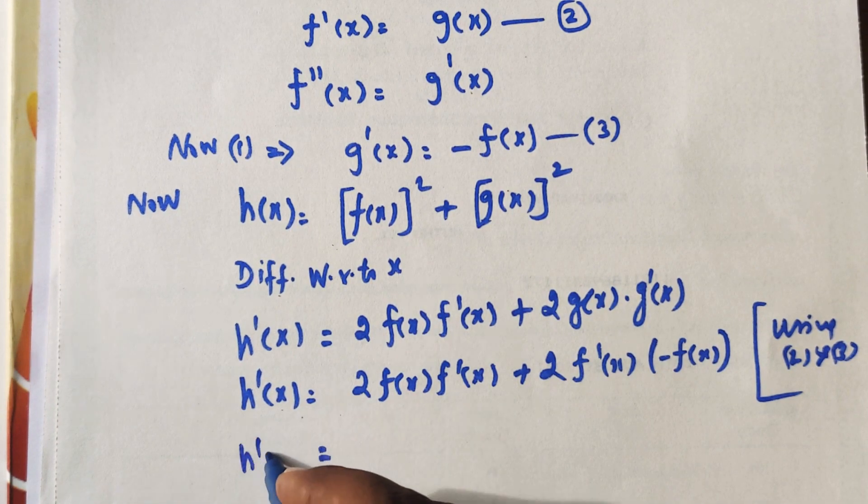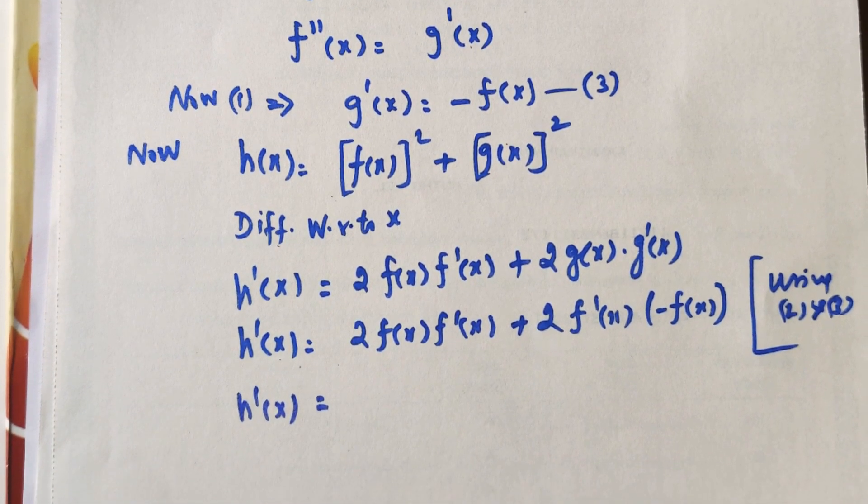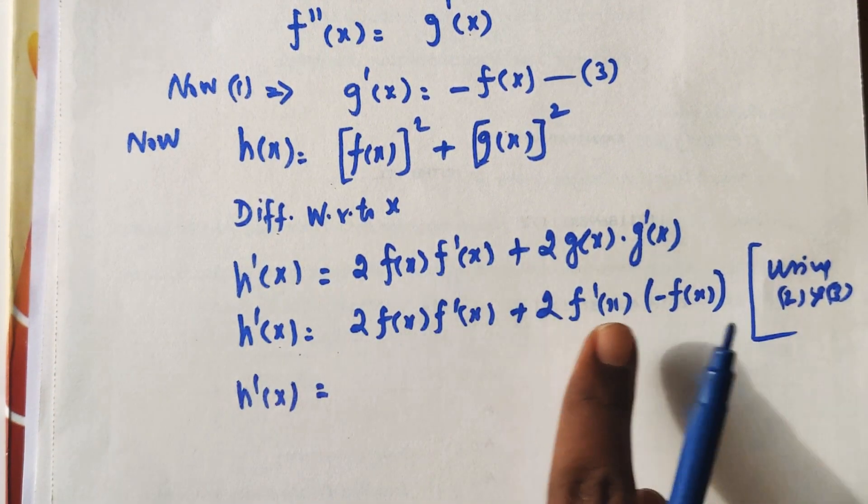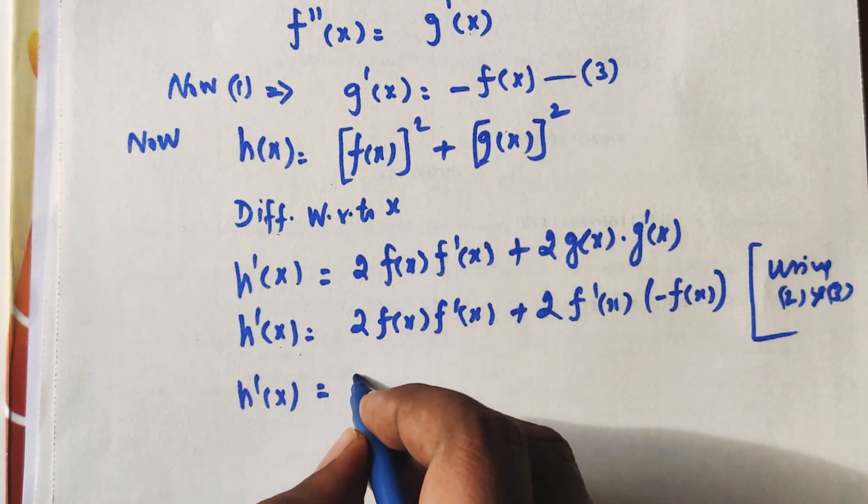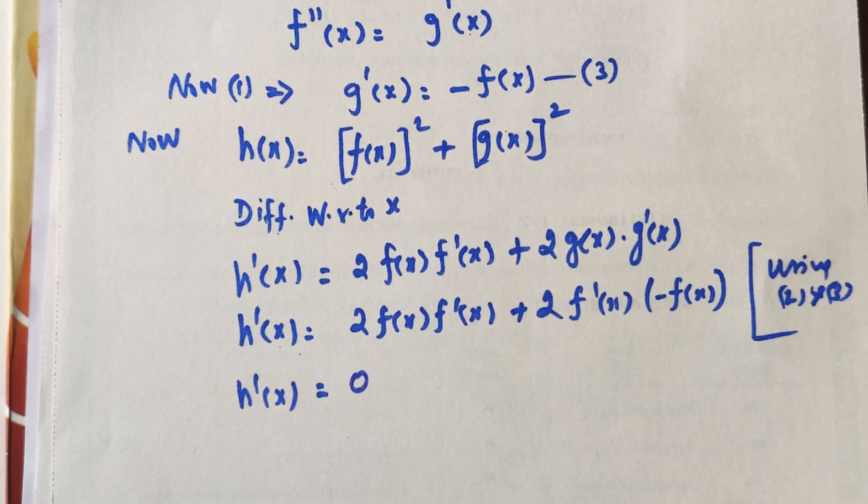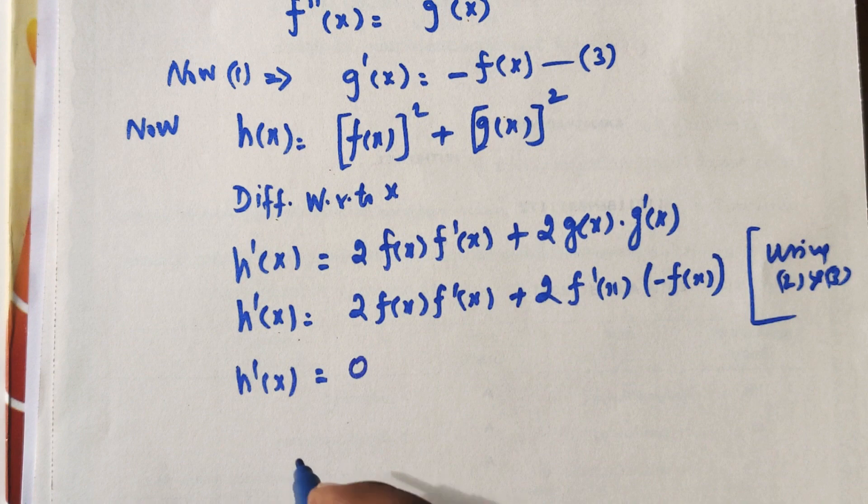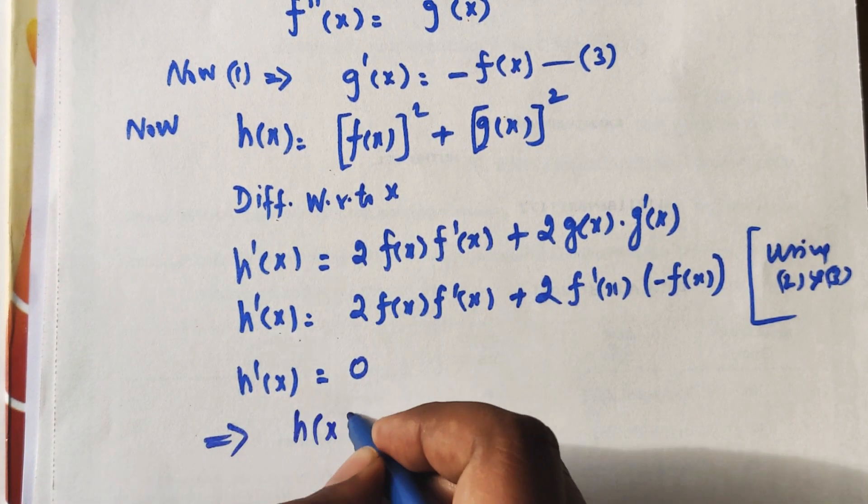Substituting gives 2 F of X times F dash of X minus 2 F of X times F dash of X equals 0. So H dash of X equals 0, therefore H of X is constant.